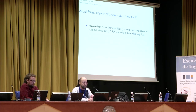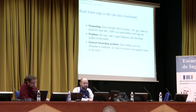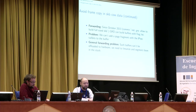Let's continue. Since a couple of years we've been building full-size buffers with frag lists using Generic Receive Offload. The problem with these buffers is that we cannot add a page fragment with the IPsec trailer because all slots are full and we even have frag lists on it. This leads to a general forwarding problem: such buffers can't be offloaded to hardware, so we need to linearize and segment them in the stack, which is really bad for performance. It's not just an IPsec problem — everybody who wants to forward such packets faces this.